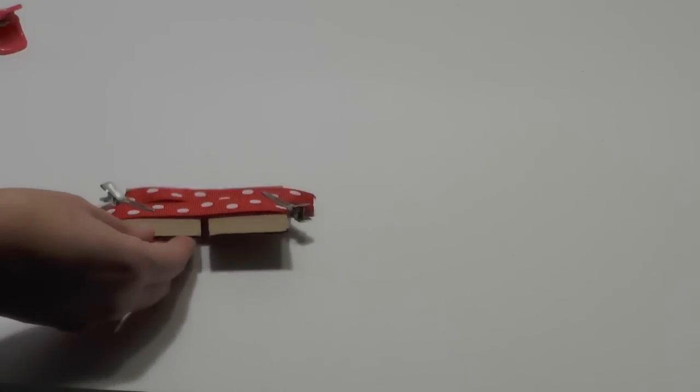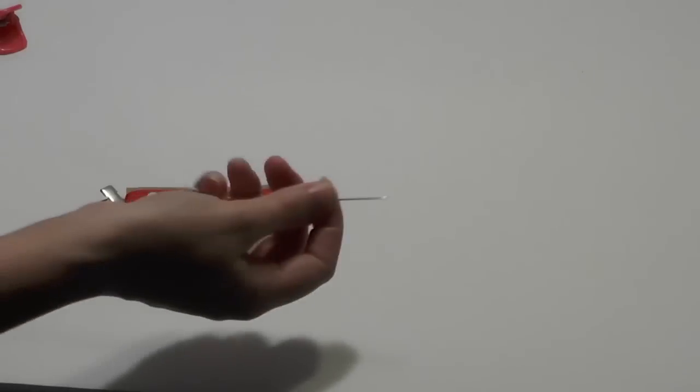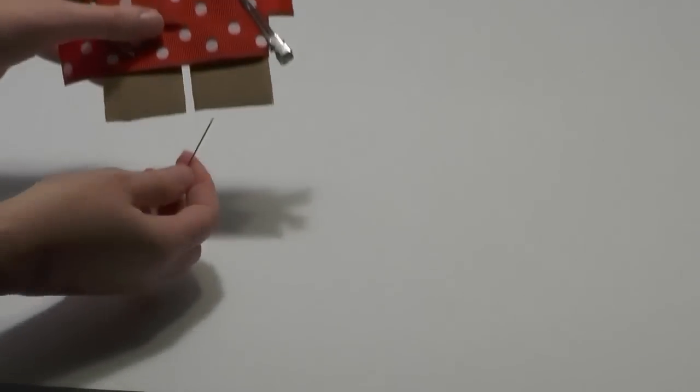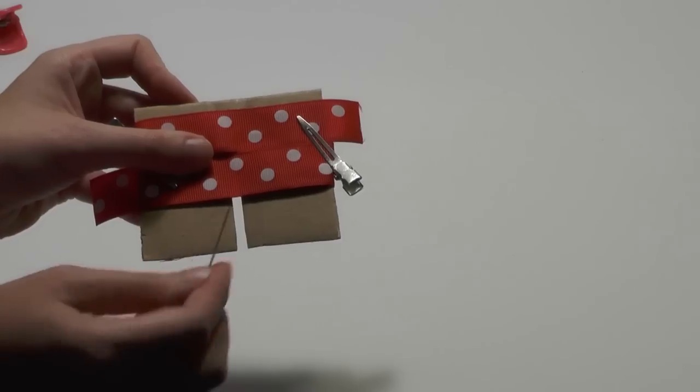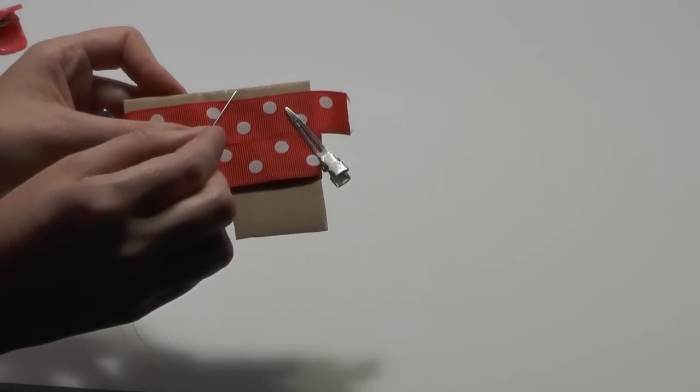Then you will take your needle and thread and just weave in and out right here through this slit. You want to start at the bottom and make your way to the top.